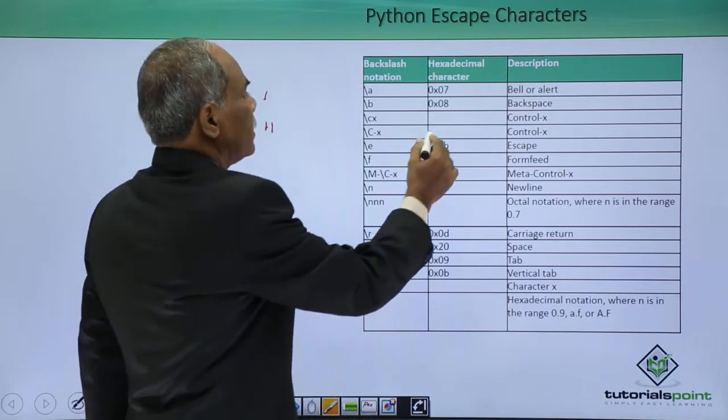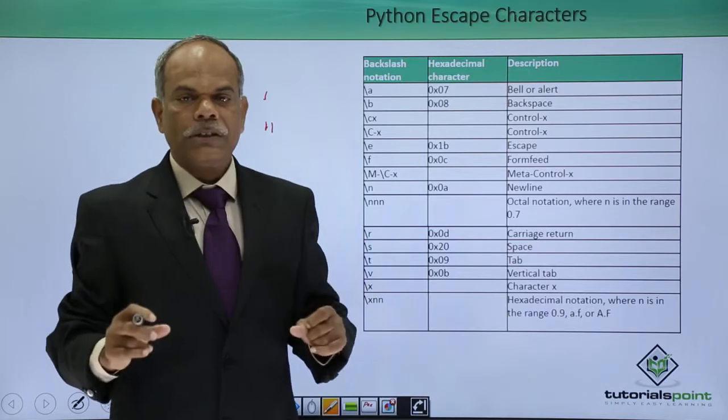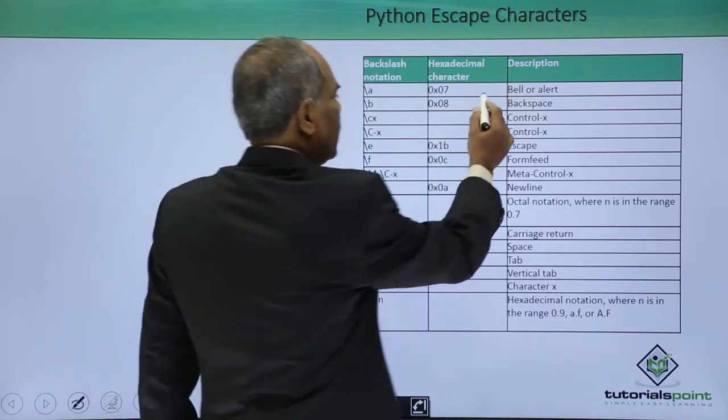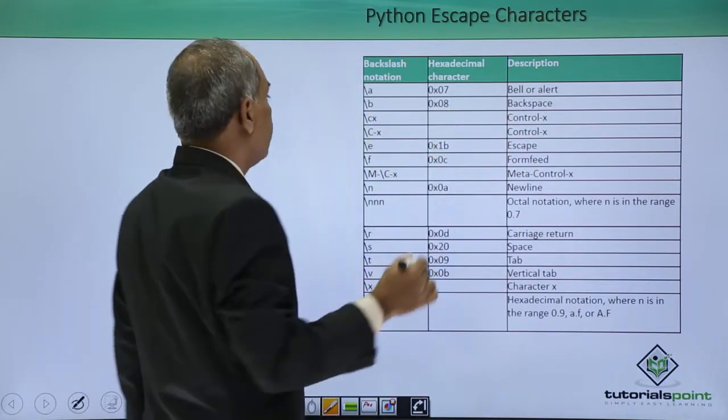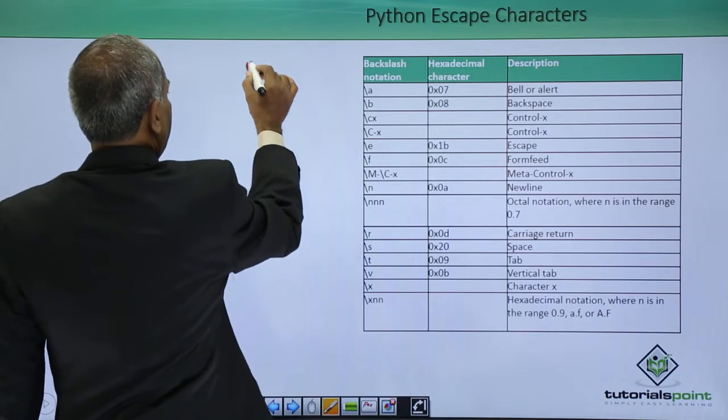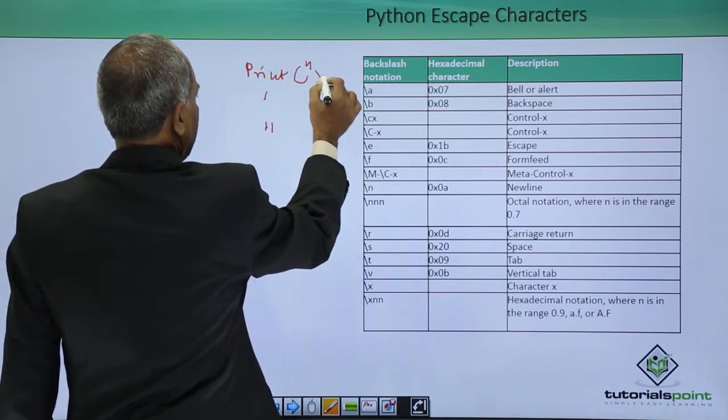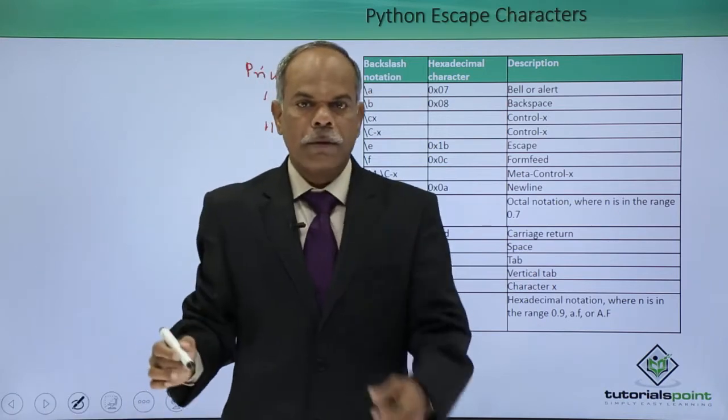For example, if you want to generate a beep or bell sound with the help of a string, bell or alert is represented by slash a. So if I say print slash a, it will generate a beep or bell sound.